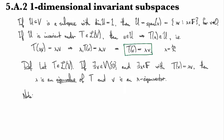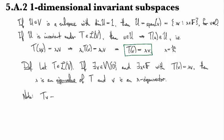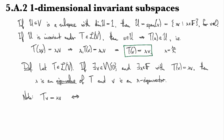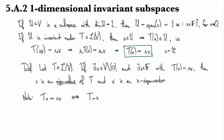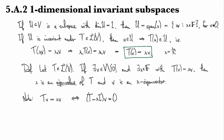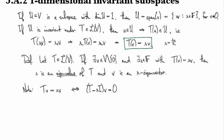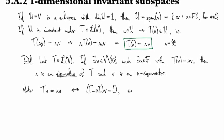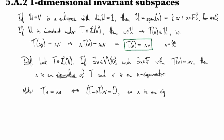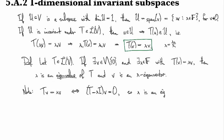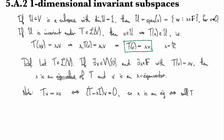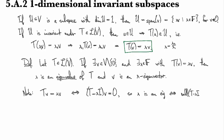Note that T(v) equals lambda v if and only if (T minus lambda I) applied to v is equal to 0. So lambda is an eigenvalue if and only if the null space of T minus lambda I is non-trivial.